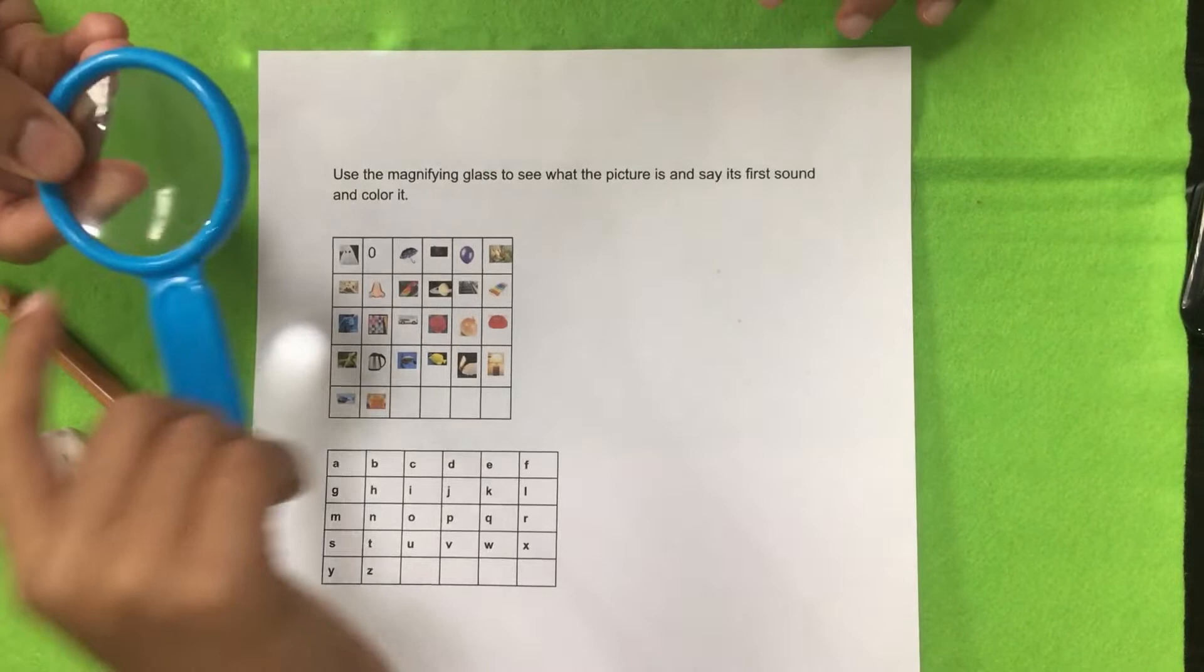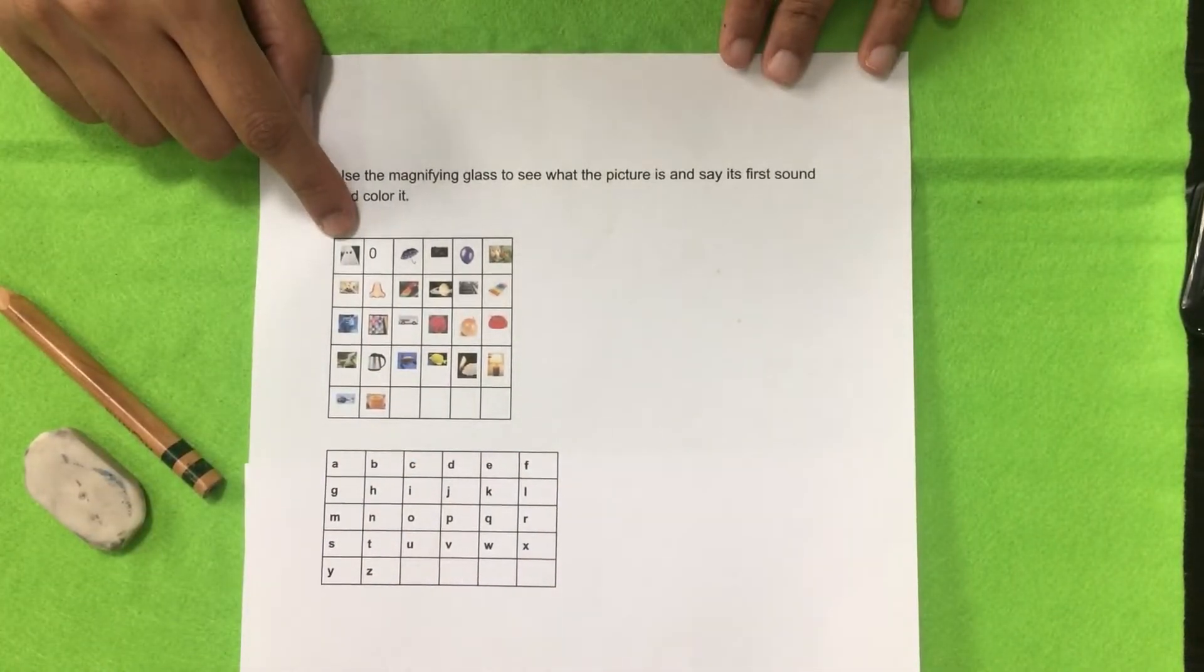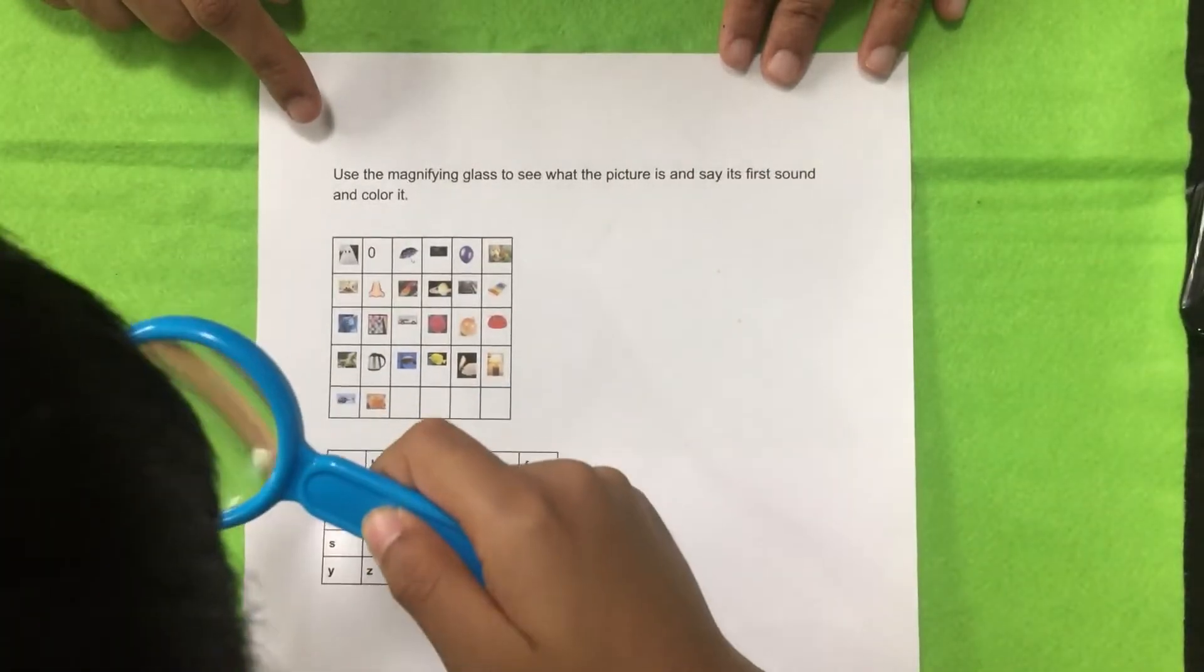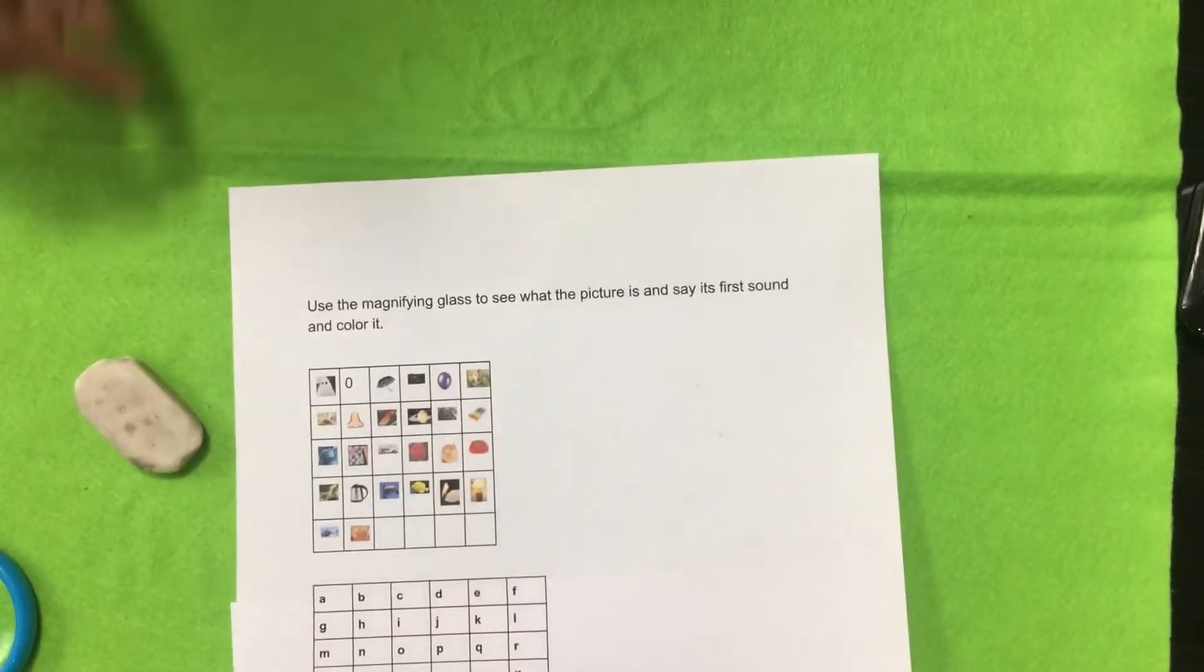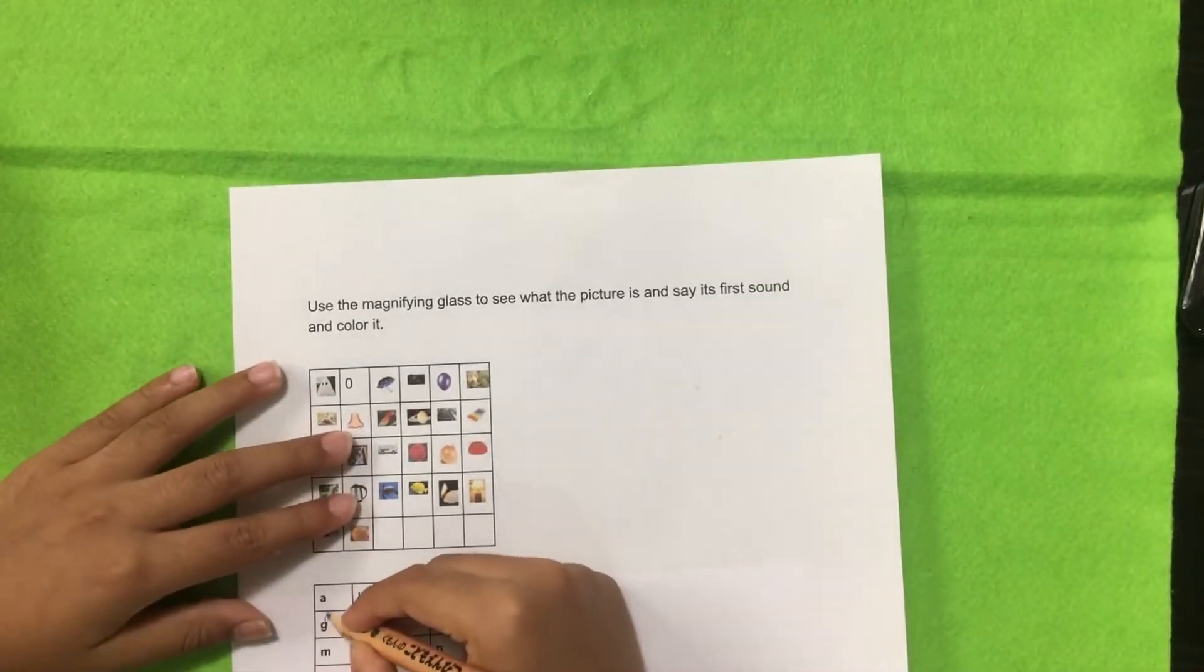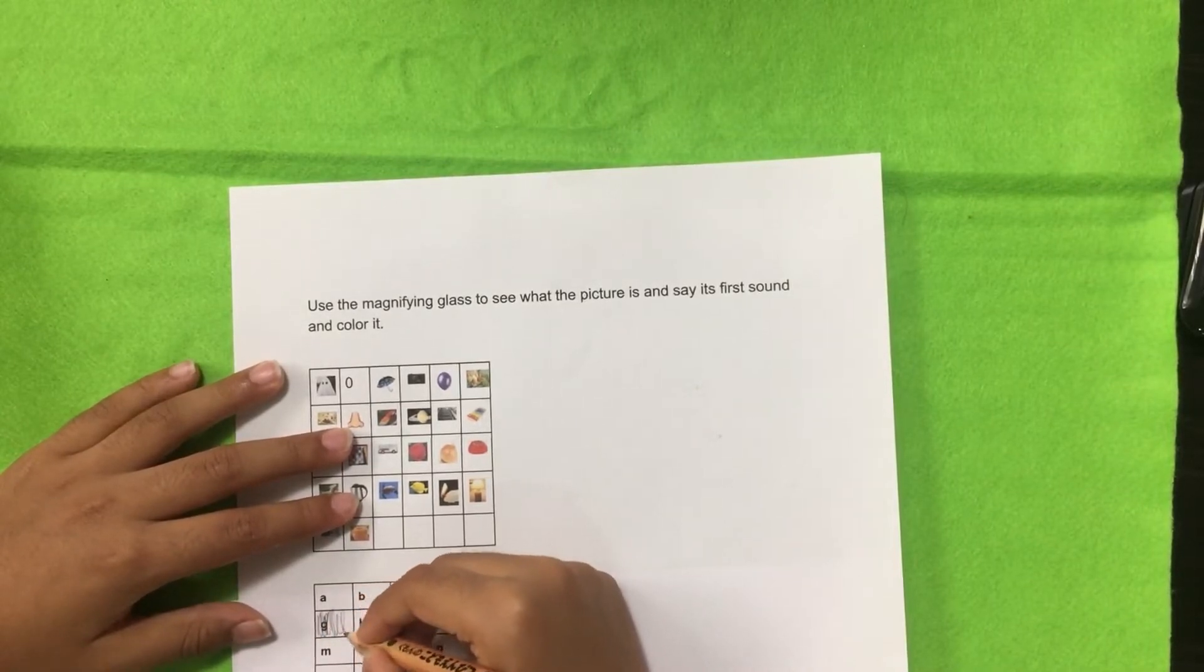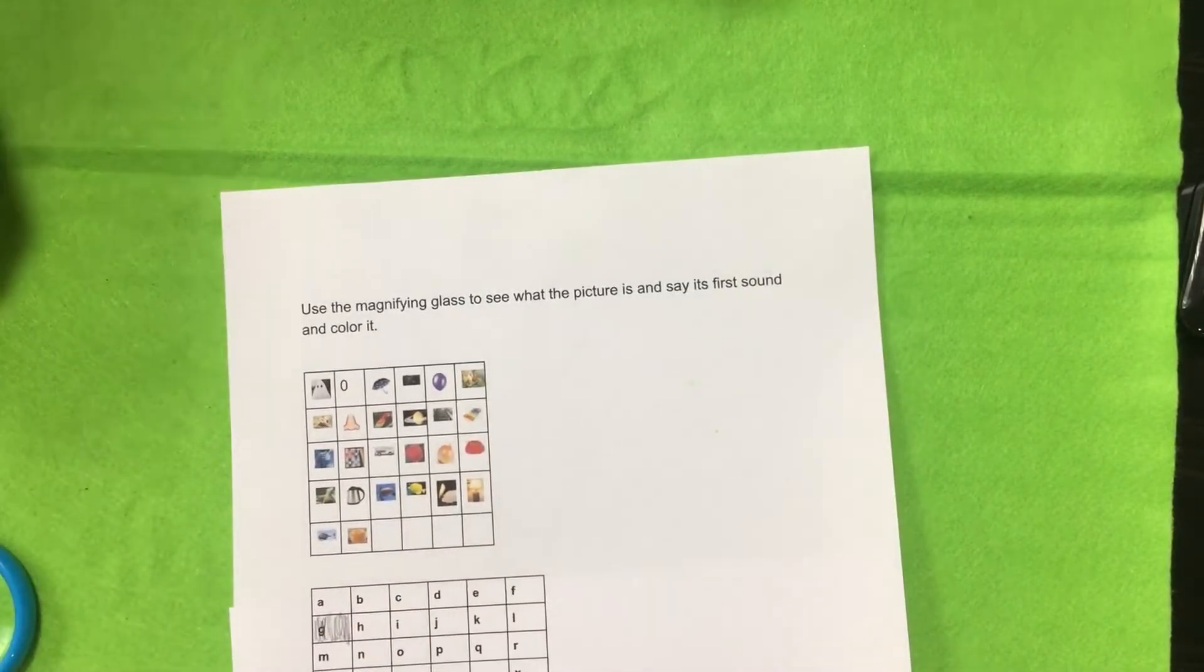Are you ready Arav? Yes. So first you need to check this, tell me the word, and then say the first sound. Okay? Ghost. Ghost. What is the first sound you hear when we say ghost? Ghost, ghost, ghost. G is the shade. Ghost. Okay.